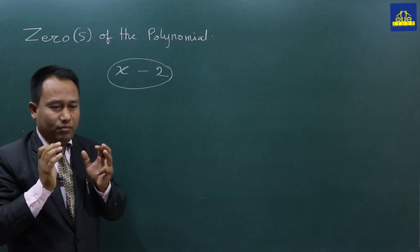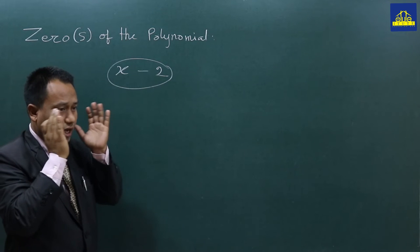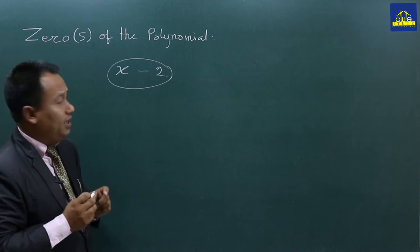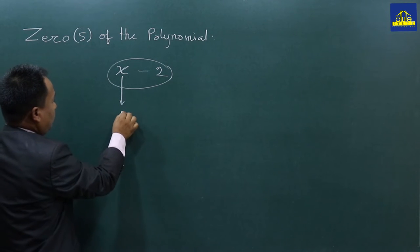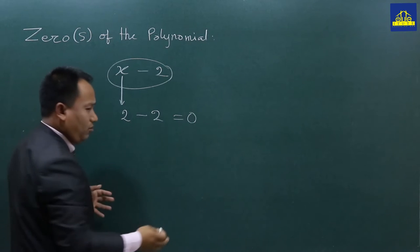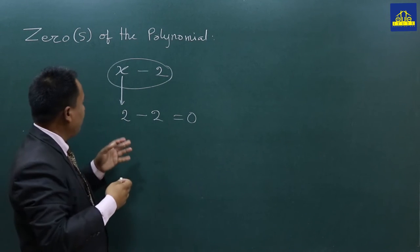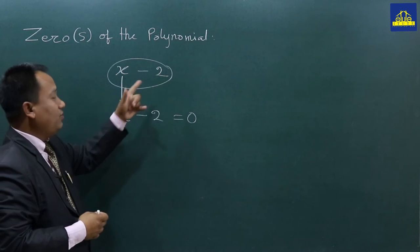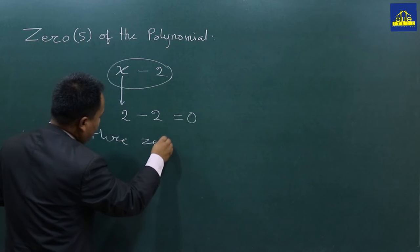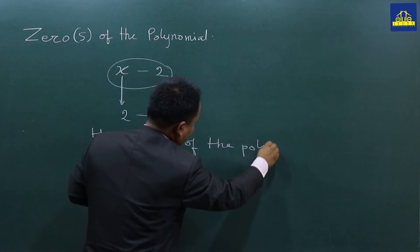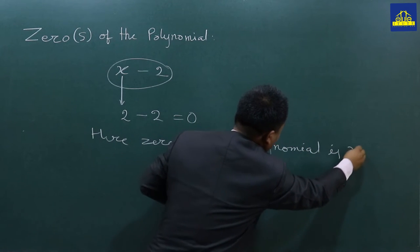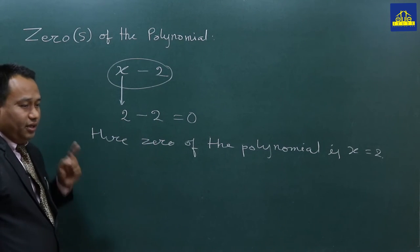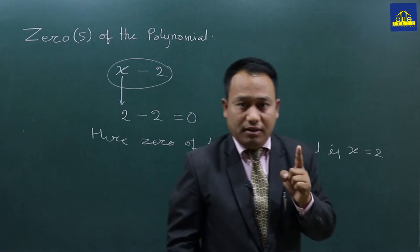If you have a polynomial, you can imagine which value will become the zero of this polynomial. For example, x minus 2 — it is the linear polynomial. You can see that it is 2 minus 2, which equals zero of the polynomial. So zero of the polynomial is equal to 2. Here you have only one zero of the polynomial.